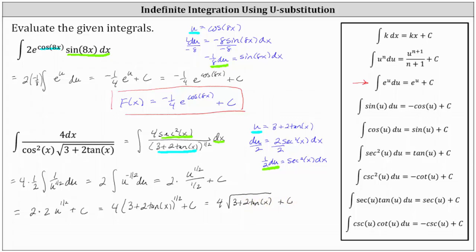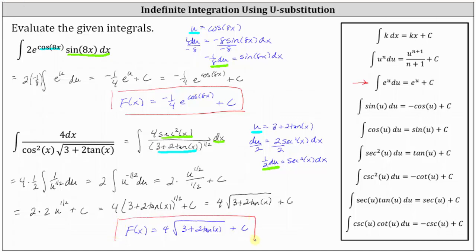Let's write this as big F of x. Big F of x is equal to four times the square root of the quantity three plus two tangent x, plus c. This is the family of functions whose derivative is equal to the given integrand function. I hope you found this helpful.